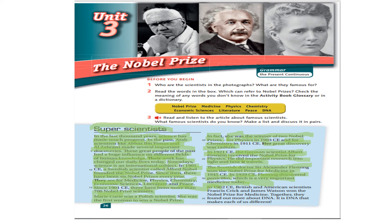In 1962, British and American scientists Francis Crick and James Watson won the Nobel Prize for medicine together. They found out more about DNA — اكتشفوا المعلومات المزيدة عن DNA. It is DNA that makes each of us different from each other — بيعمل اختلاف بين الشخص والشخص.